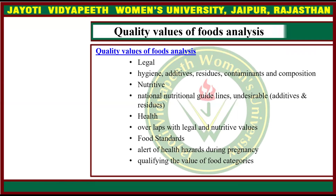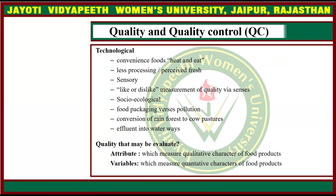Quality values of food analysis include: legal aspects such as hygiene, additives, residues, contaminants and composition; nutritive aspects covering national nutritional guidelines; undesirable elements such as additives and residues; and health aspects which overlap with legal and nutritive values. These also include food standards, alerts of health hazards during pregnancy, and qualifying the value of food categories.